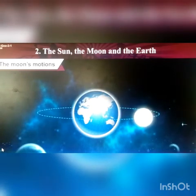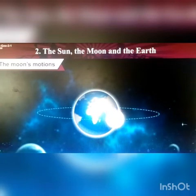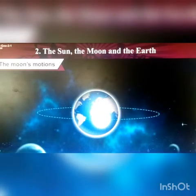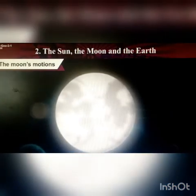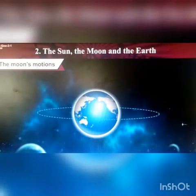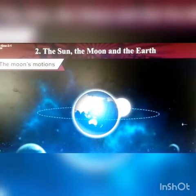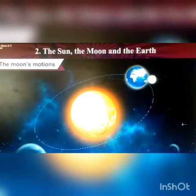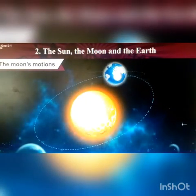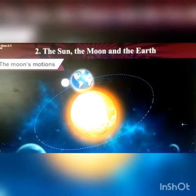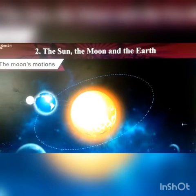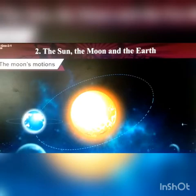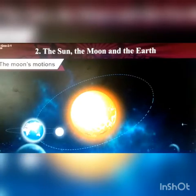Rotation and revolution of the moon. Rotation: like the earth, the moon also rotates around itself. Revolution: the moon revolves around the earth, and it is the earth that revolves around the sun. So the moon does not revolve directly around the sun, but it revolves indirectly around the sun.